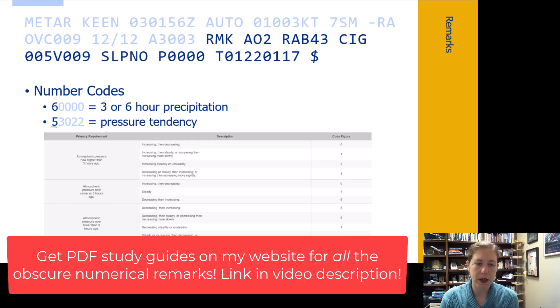And then we have this information, we have the code, and then we have a different amount of pressure. So essentially we can look at the tendency with this group here. And then the last three numbers are going to tell us the amount of pressure change in tenths of a millibar.